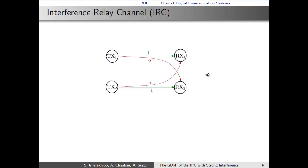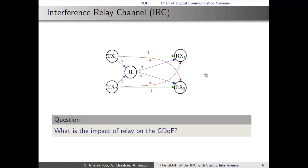Now, by deploying an additional node, we obtain the interference relay channel. The relay is connected to the transmitters via those links here parameterized by gamma, and to the receivers via those links parameterized by beta. The question is now, what is the impact of the relay on the generalized degrees of freedom?